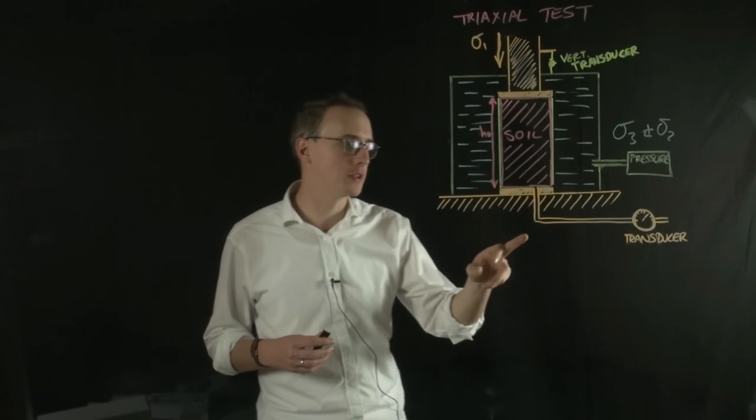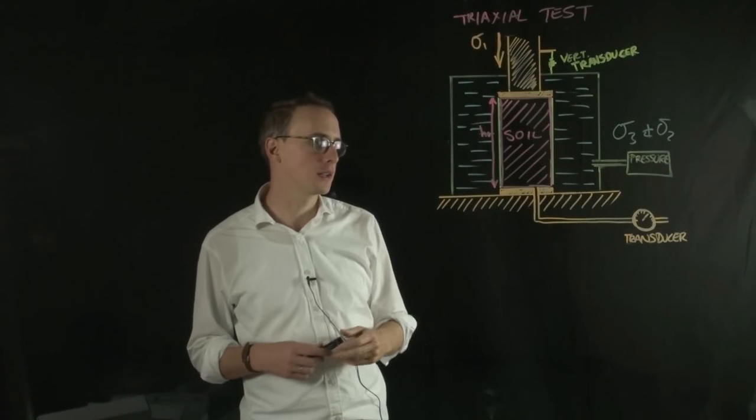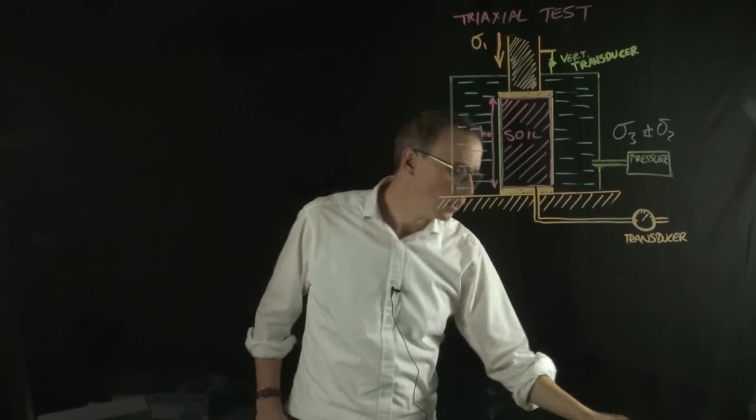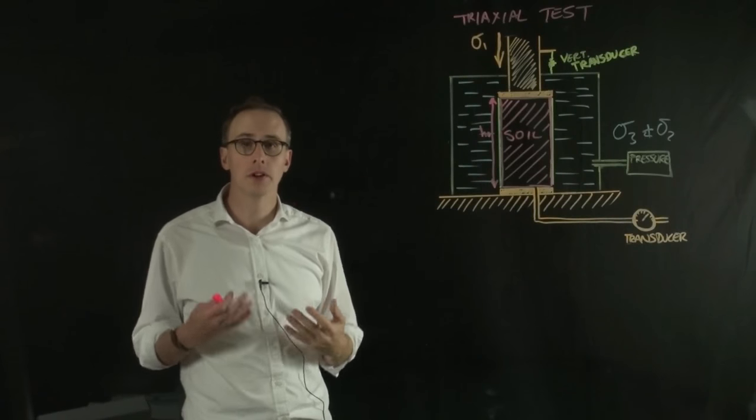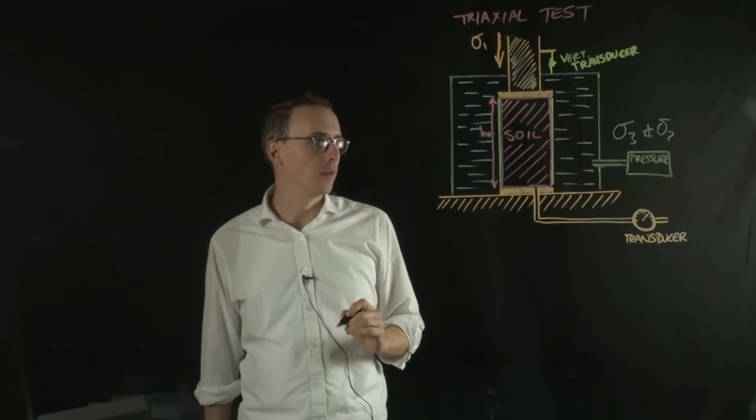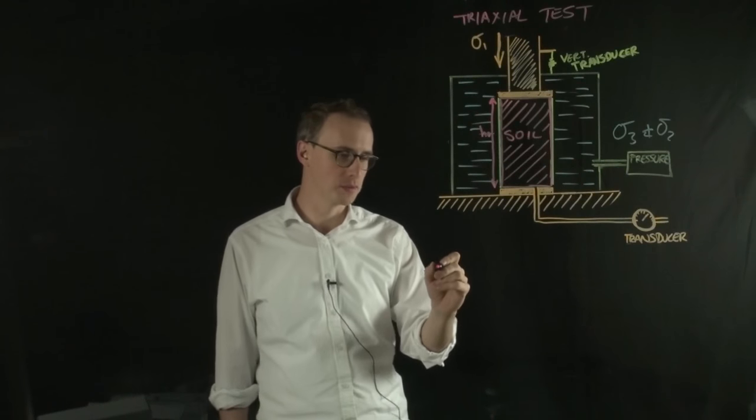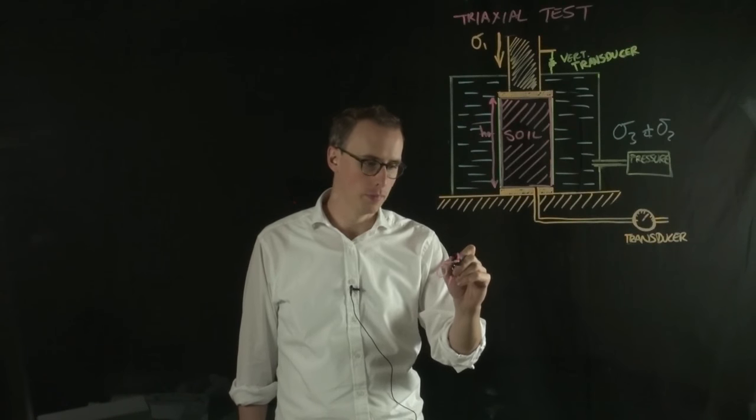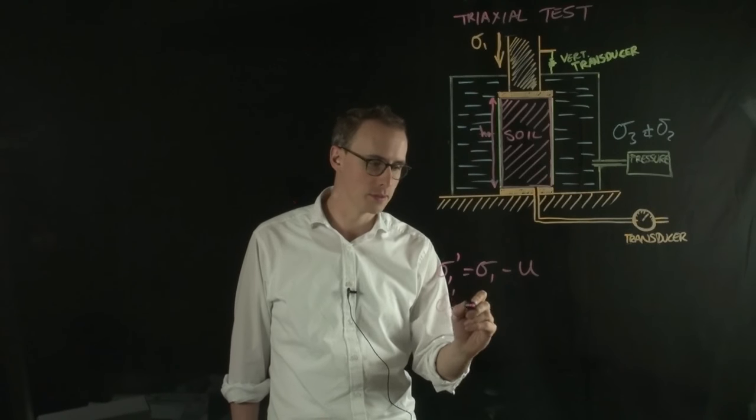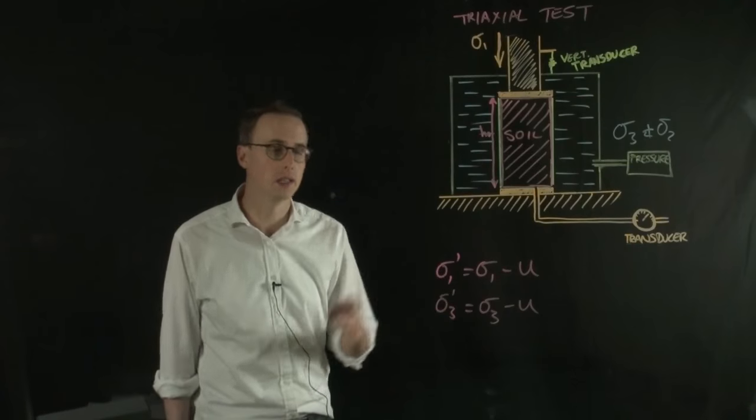During the test, we can monitor the pore water pressure. We'll have a connecting tube that connects the pore water in the material to a transducer. The key feature is that we can monitor the pore water pressure during the test. By taking that pore water pressure away from sigma-1 and sigma-3, we can understand the effective stress. So sigma-1' = sigma-1 - u and sigma-3' = sigma-3 - u.